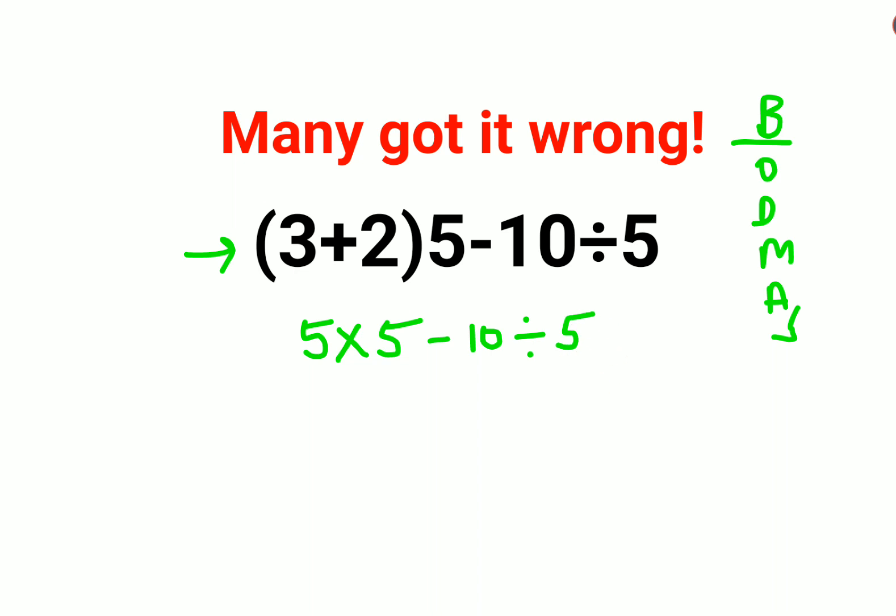Okay, now please understand: division and multiplication both hold equal precedence. So what you will do is go from left to right. What comes first from your leftmost end will be done first.